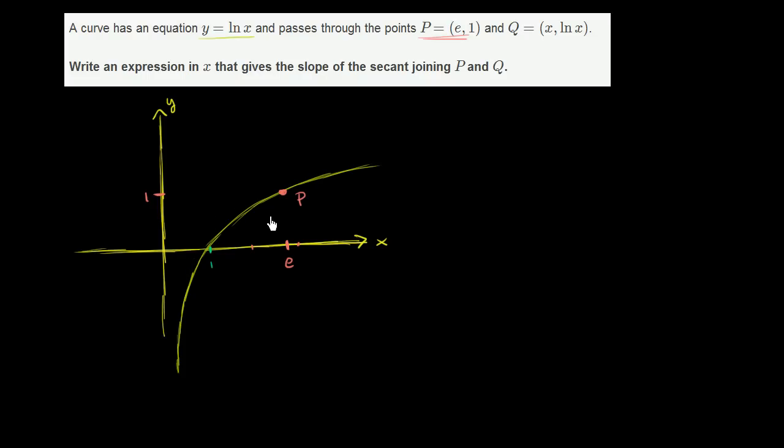And we want to find the secant line between P and an arbitrary Q. For any given x, the y value is going to be natural log of x. So let's say that this is our Q right over here. I'll do it out here. So let's say that is our Q right over there. And that's the point (x, natural log of x).